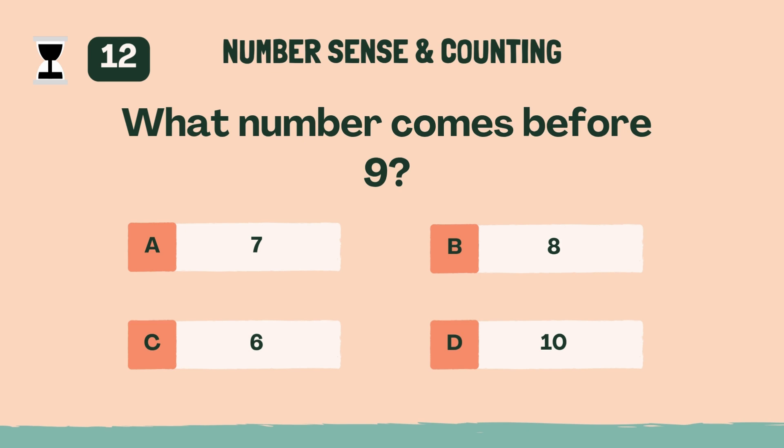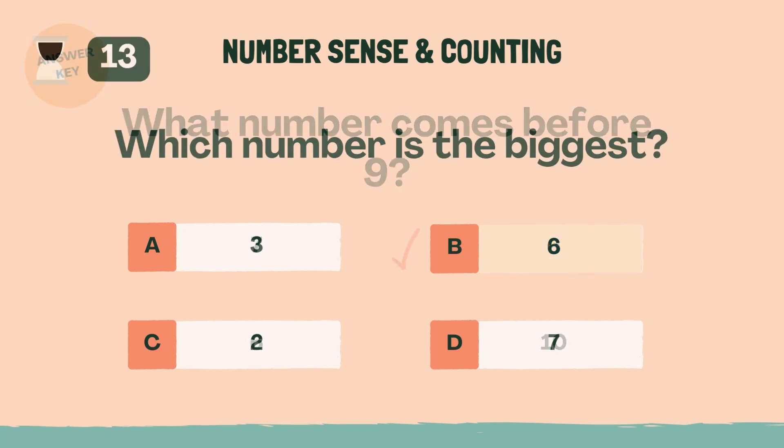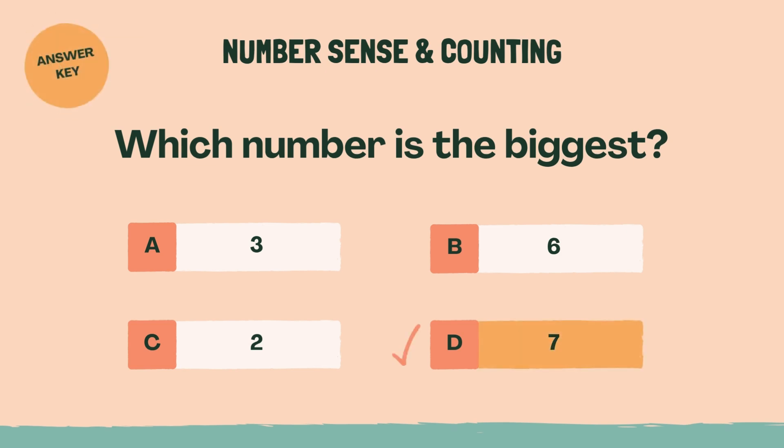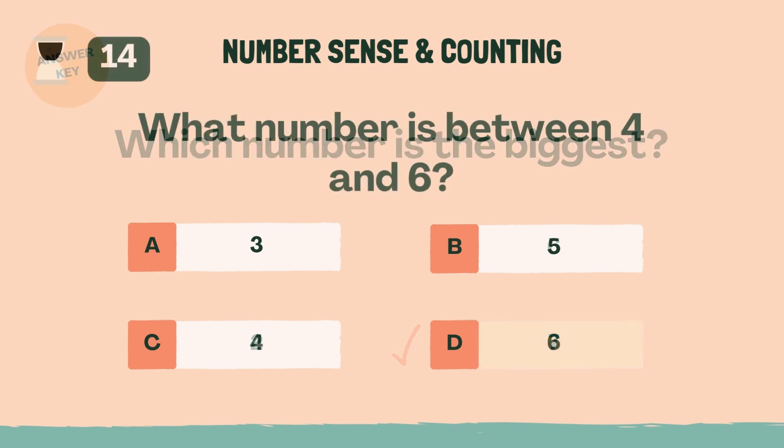What number comes before 9? B, 8. Which number is the biggest? D, 7. What number is between 4 and 6? B, 5.